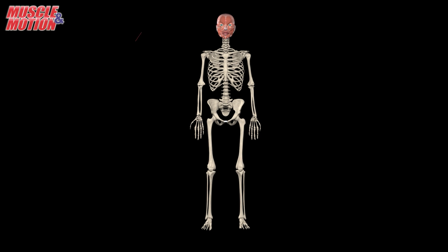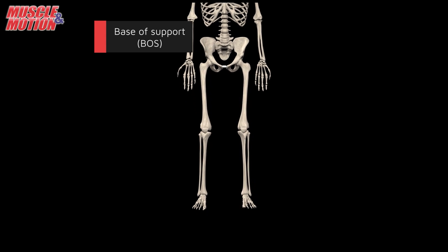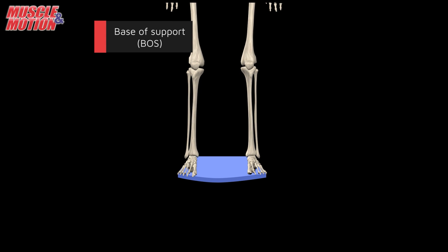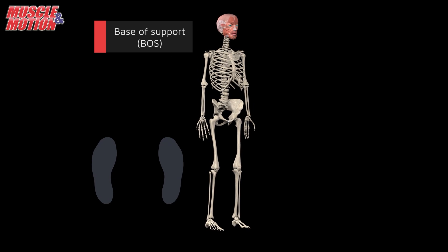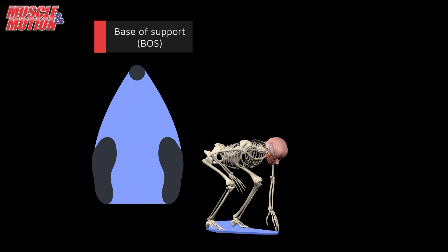The base of support (BOS) refers to the area or part of the body that is in contact with the supporting surface, such as the ground or floor. If you trace the outline of the body where it touches the ground, you define the base of support. It is the foundation that provides stability and balance to the body when standing or performing various movements.